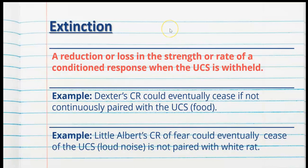Extinction is a reduction or loss in the strength or rate of a conditioned response when the UCS is withheld. Dexter's conditioned response of salivating to the bell could eventually cease if not continuously paired with the UCS — he would learn he's not going to get food when the bell is rung. Similarly, Little Albert's conditioned response of fear could eventually cease if the loud noise is not paired with the white rat — he would learn the white rat is not going to cause the noise. Conditioned responses can reduce with time or go away completely — that is extinction.